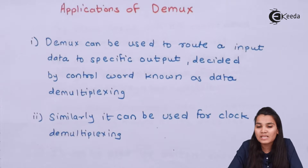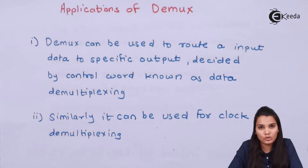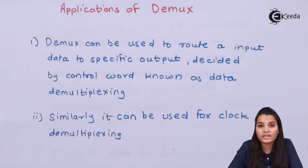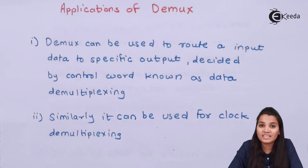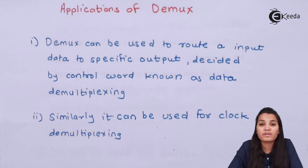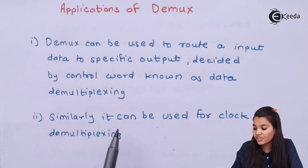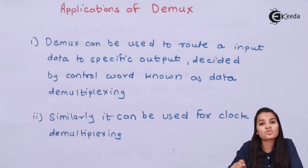We all know that demux has select lines, also known as control lines. By selecting inputs to the control line, we can easily decide the specific input directed to a specific output. This is a very important application of the demux.